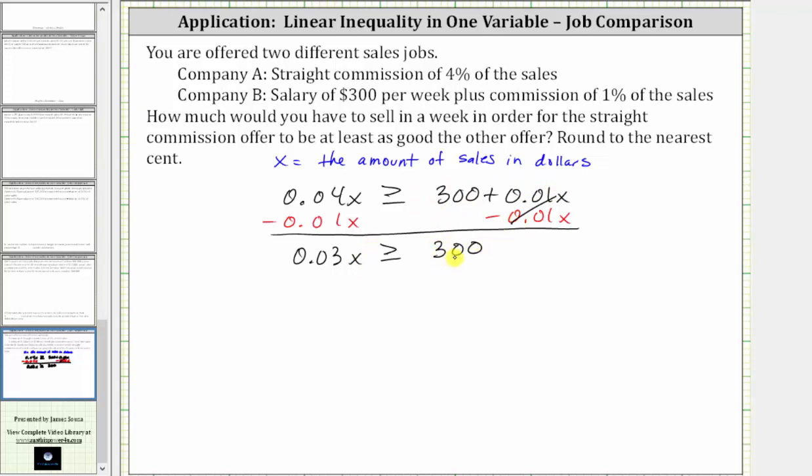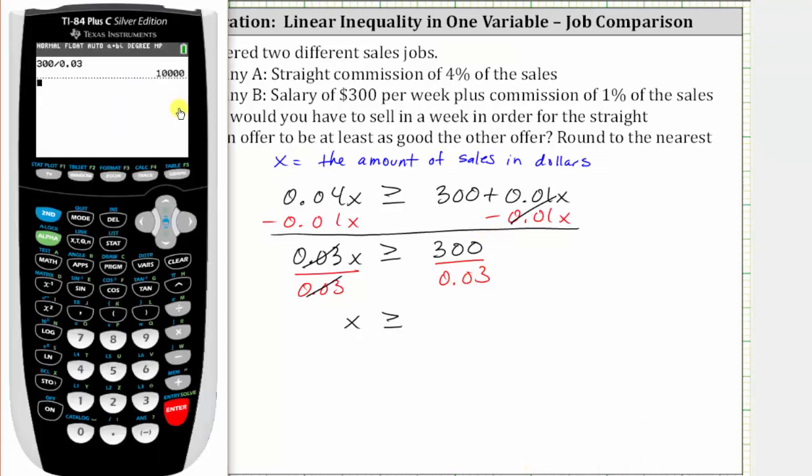The last step is to multiply or divide in order to solve for x. 0.03x means 0.03 times x. To undo the multiplication and solve for x, we divide both sides by 0.03. Simplifying, 0.03 divided by itself simplifies to one. One times x is x. X is greater than or equal to 300 divided by 0.03, which is equal to 10,000.